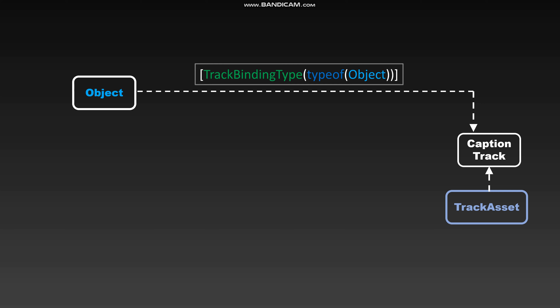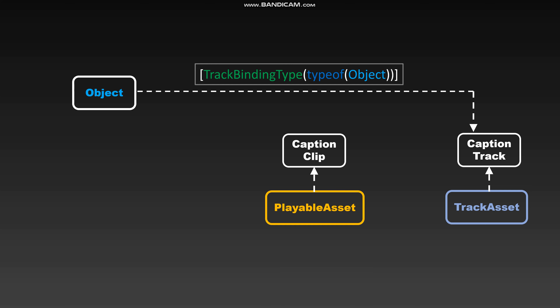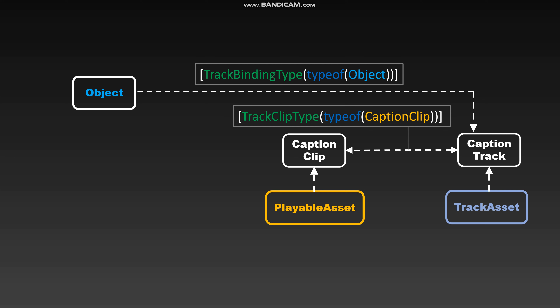The second class we'll create will be called CaptionClip, and this will derive from PlayableAsset. CaptionClip will maintain a list of properties that we would like to change on the object. But CaptionClip and CaptionTrack know nothing about each other, so we can fix that by specifying the attribute TrackClipType, telling CaptionTrack that it should accept clips of type CaptionClip.